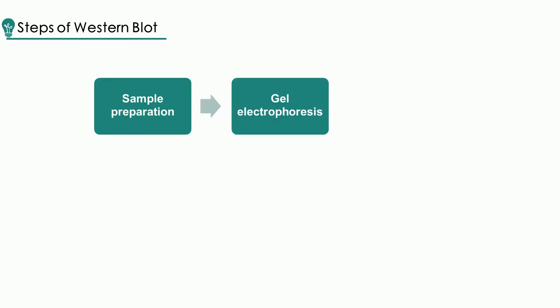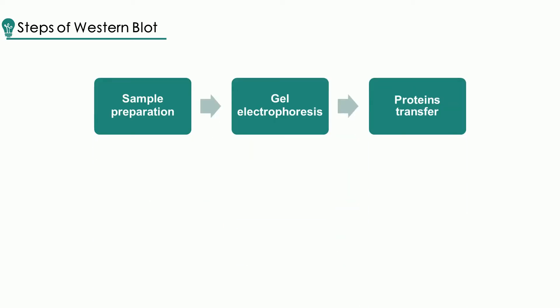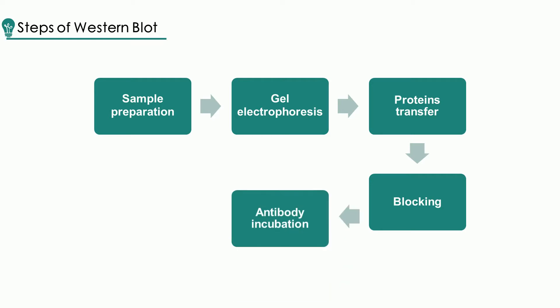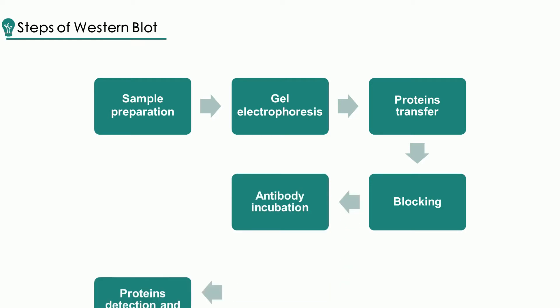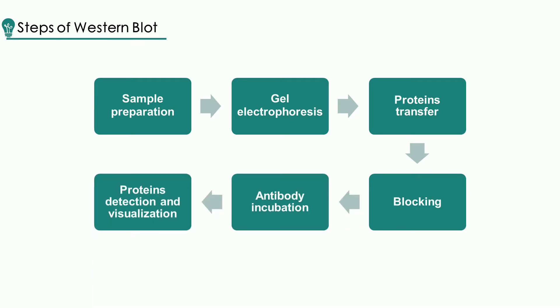There are six steps involved in Western blot, including sample preparation, gel electrophoresis, protein transfer, blocking, antibody incubation, and protein detection and visualization.